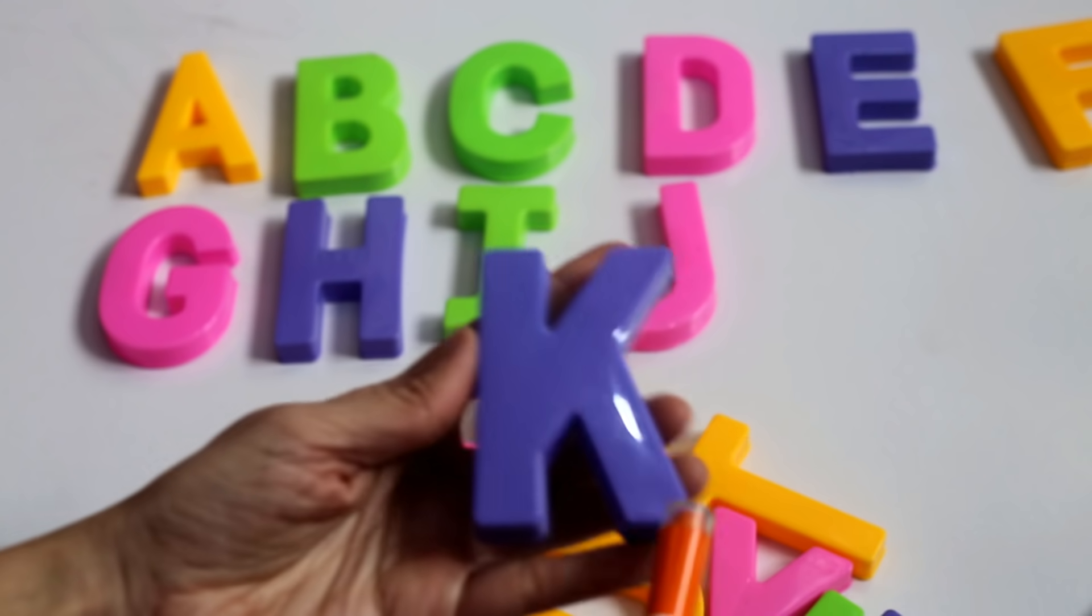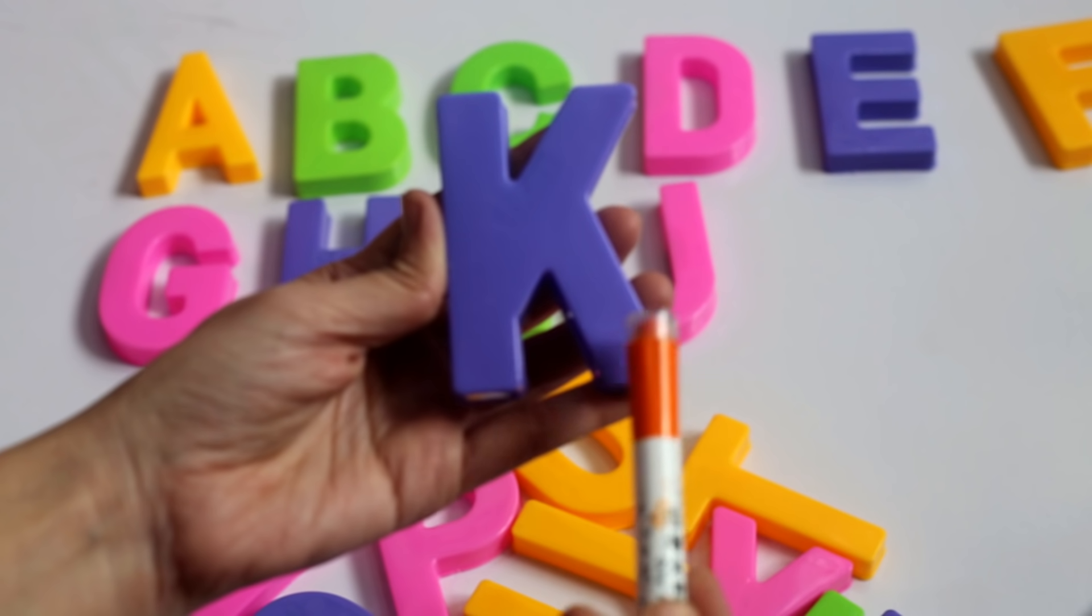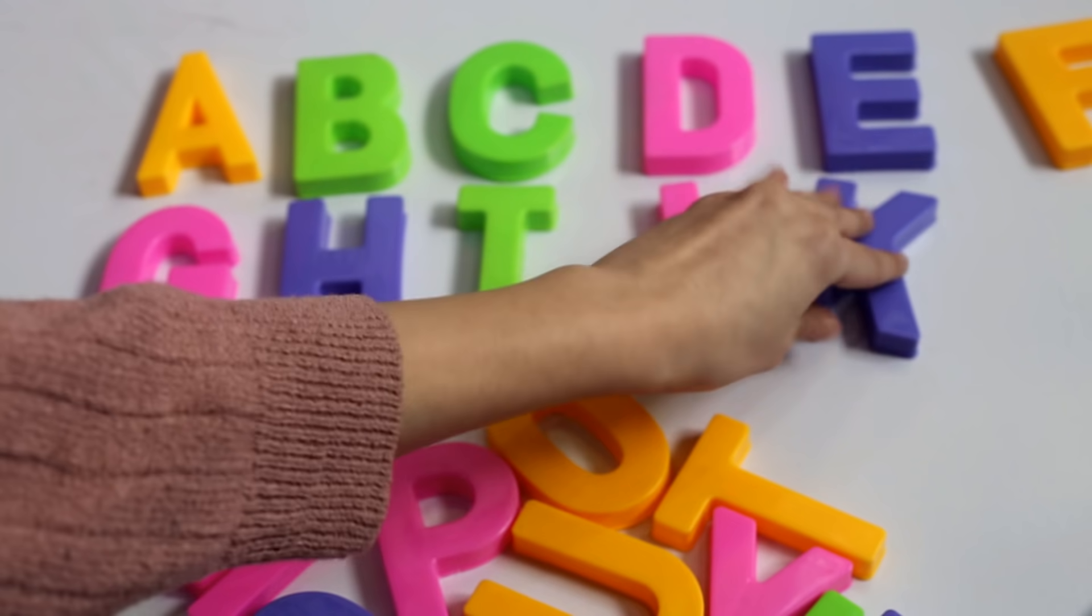Where is K? This is K. This is K. It's shaped like this. K.